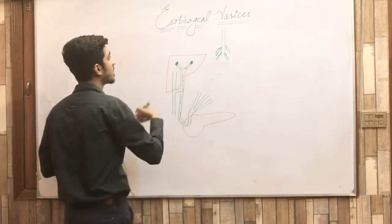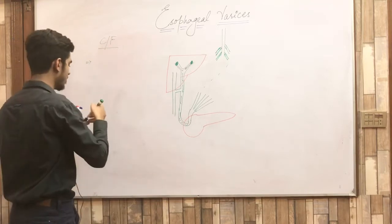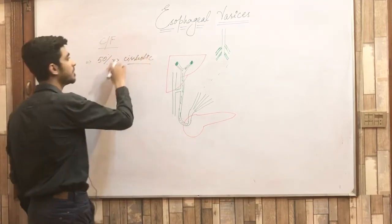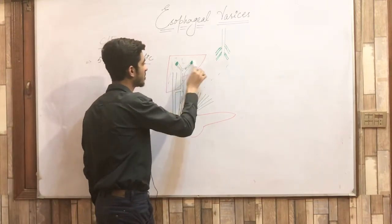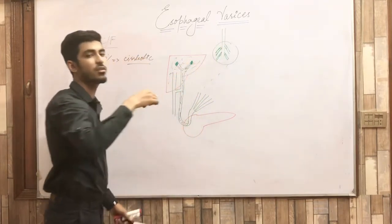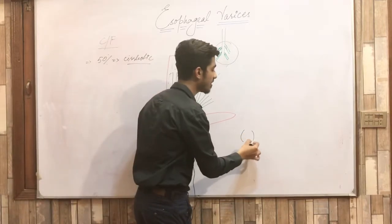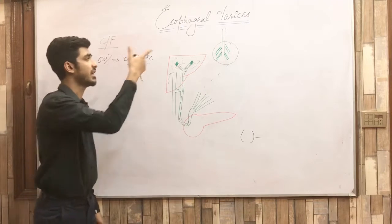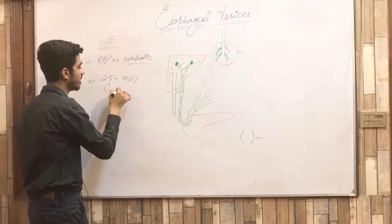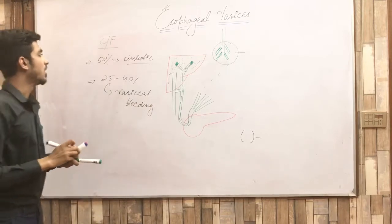Moving on to the clinical features of esophageal varices: approximately 50% of cirrhotic patients develop esophageal varices, because liver disease causing cirrhosis also leads to portal vein obstruction and portal hypertension. Varices can occur in different locations — esophageal varices in the esophagus, gastric varices in the stomach, and rectal varices in the rectum. Around 25–40% of patients experience variceal bleeding.